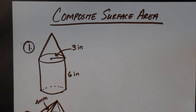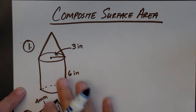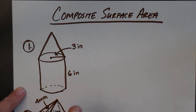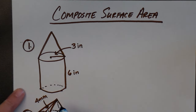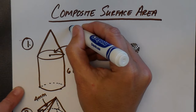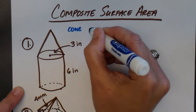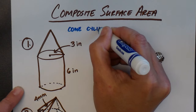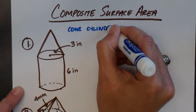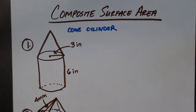So first we're going to look at this one. You have to determine what shapes you're dealing with. In this particular composite shape, I'm dealing with a cone and a cylinder.